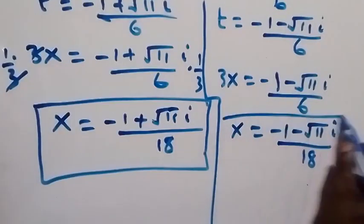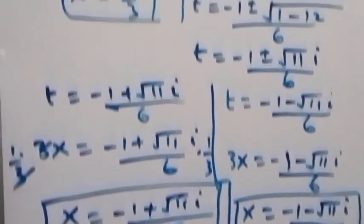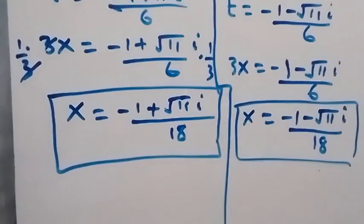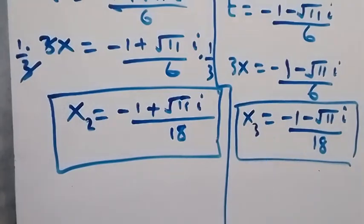Altogether we have three solutions: x₁ equals 1 over 3, x₂ equals (minus 1 plus root 11 i) over 18, and x₃ equals (minus 1 minus root 11 i) over 18. Thank you for watching — don't forget to subscribe for more exciting videos, share this video, give it a thumbs up. See you next class, bye for now!